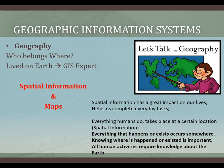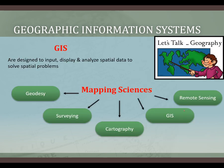Everything that happens or exists happens somewhere, and knowing where is very important as we seek to understand our earth. All human activities require some knowledge of the earth — building a house, driving somewhere, going to a store. GIS, or geographic information system, is designed to input data, display it, and perform analysis to solve spatial problems. Mapping science is vast, especially for engineers.